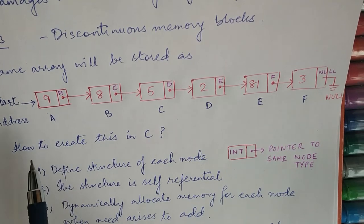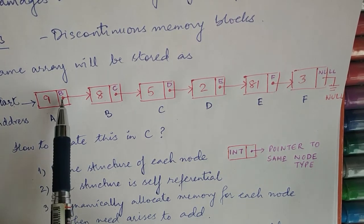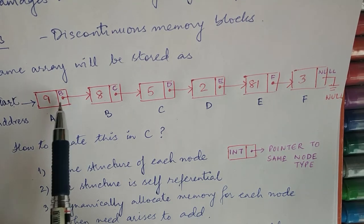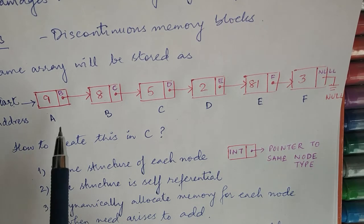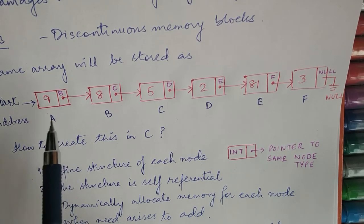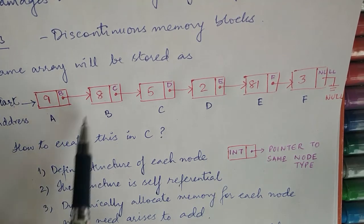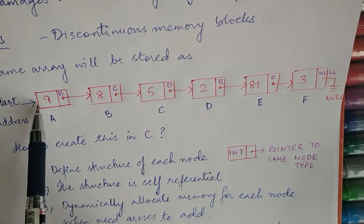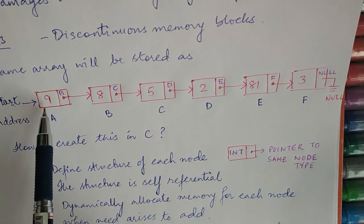Our linked list can be of many types as you must have read in your notes. You can have one pointer field or you can have two pointer fields, in which case it becomes a doubly linked list. But what we are going to do here is just the singly linked list for now. So how do we create a linked list? First of all, we need to know what is the structure of the node.